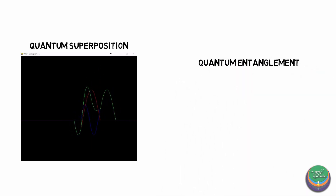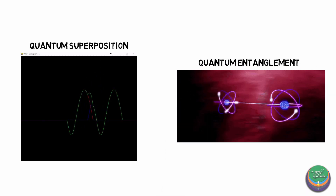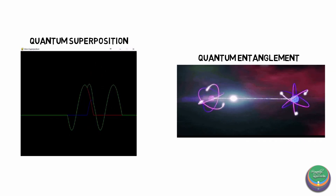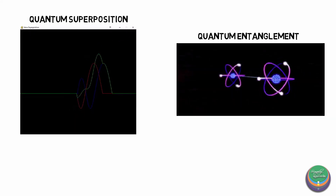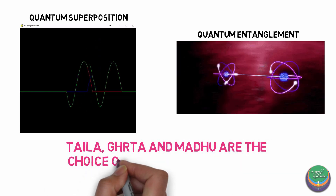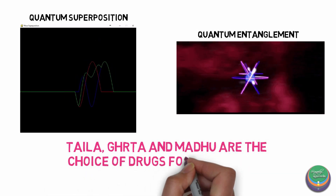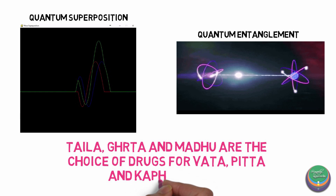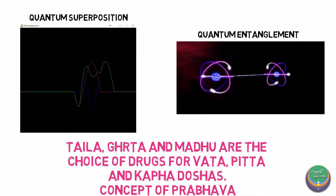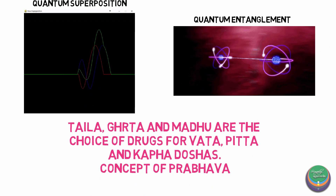This can be proven by understanding the principles of quantum superposition and quantum entanglement — do look into them and try to correlate. These principles also prove why Thaila, Ghrita, and Madhu are the choice of drugs for Vata, Pitta, and Kapha Doshas respectively. The concept of Prabhava can also be understood easily by learning this.